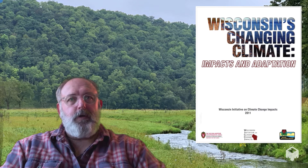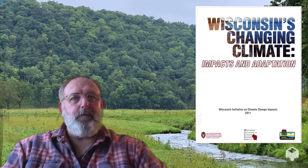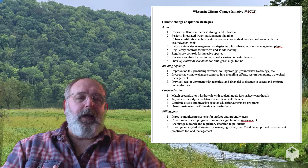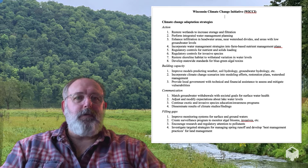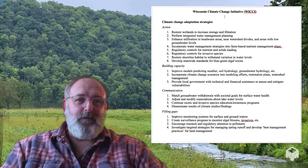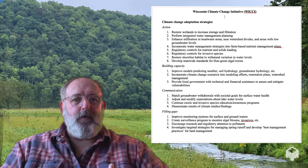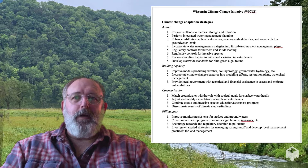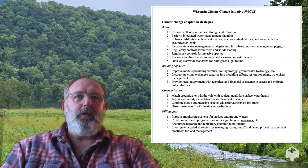The Wisconsin Initiative on Climate Change Impacts, WICI, published a report in 2011 that had an entire chapter dedicated to climate change adaptation. That chapter can be summarized into four main points. An adaptation strategy for Wisconsin would include: action — things that we do now to get ready; building capacity — things we need to work on in order to get ready; communication — mostly focused on matching expectations of citizens and agencies so we're all on the same page; and finally, filling gaps — collecting more data and monitoring data over time so that we can be responsive and adaptive to change as it happens.